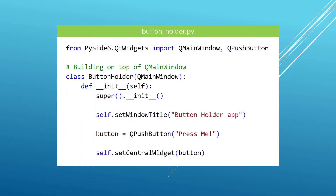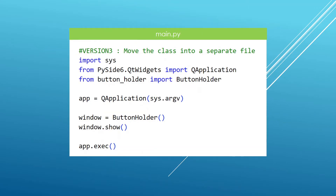We can do even better and create a Version 3 of our application where we extract the ButtonHolder into a separate file. We create a file named buttonholder.py and put the code to create our buttons, windows, and related logic in there. In the main file, we import sys, QApplication, and ButtonHolder, and we can use ButtonHolder even though its details are not in this file. This makes main.py much easier to read.